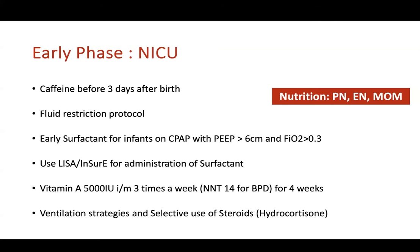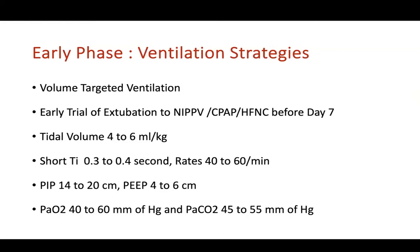Ventilation strategy and selective use of steroids also matter in the early phase. Nutrition plays a pivotal role — aggressive enteral and parenteral nutrition concentrating on mother's own milk is key across the early, evolving, and established phases. Ventilation strategies should use volume-targeted ventilation and aim to extubate babies to non-invasive ventilation — NIPPV, CPAP, or HFNC — as early as possible. Babies extubated from invasive ventilation before seven days are less likely to develop BPD. Tidal volume targeting should be 4 to 6 mL/kg.